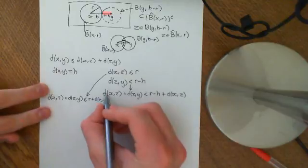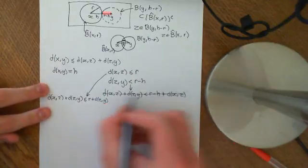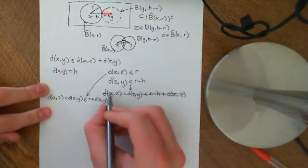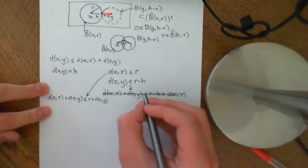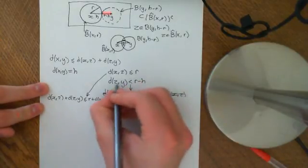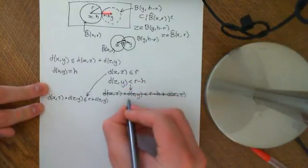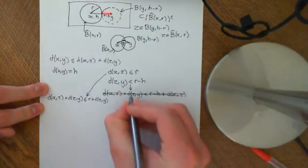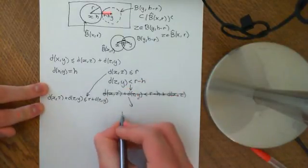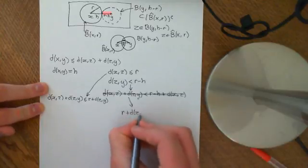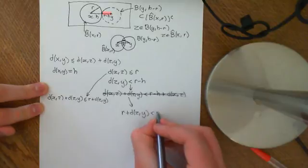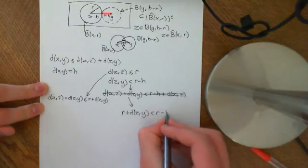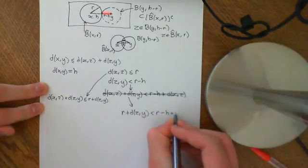What I've done wrong here is I shouldn't have done that. That is perfectly true, but it's not very helpful. What instead I want to do is I want to add r onto both sides of this one. So from this inequality, I want to add r onto both sides, and I get that r plus the distance between z and y is less than r minus h plus r.